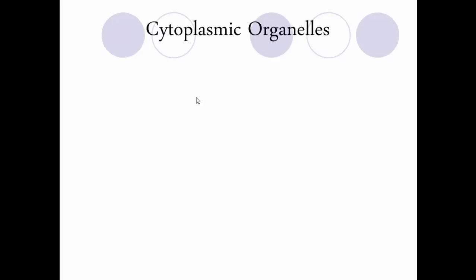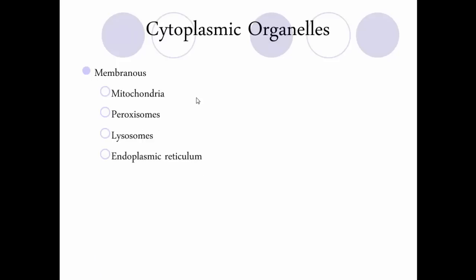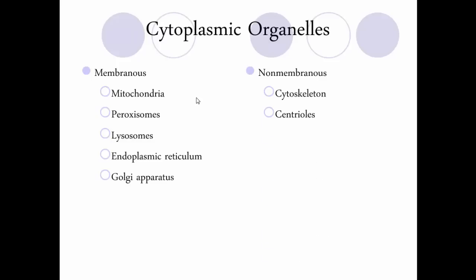There are membranous cytoplasmic organelles — like the mitochondria, peroxisomes, lysosomes, the endoplasmic reticulum, and the Golgi apparatus — and non-membranous ones, like the cytoskeleton, centrioles, and ribosomes. Ribosomes are made of protein and ribosomal RNA, not surrounded by a membrane. It's important to remember that some organelles are surrounded by a double membrane, while others are more fibrous in nature.